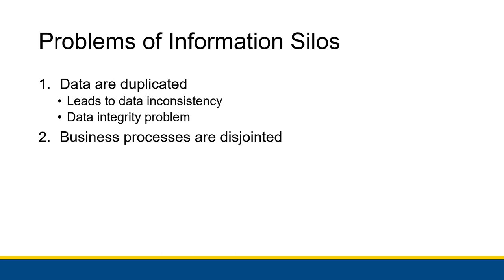The processes themselves are disjointed, unlike if everyone were sharing information from the same database — where only the parts they need are presented to them, but it's all based on the same database. If they're not an information silo, that communication might be able to happen a lot faster.